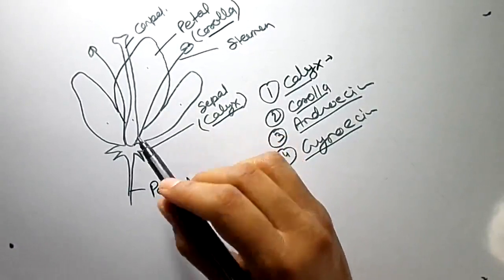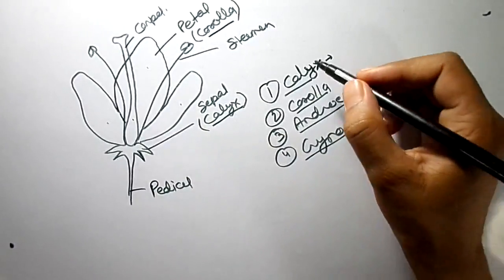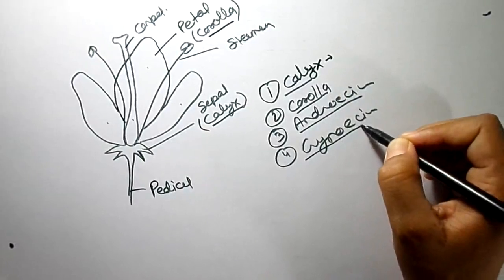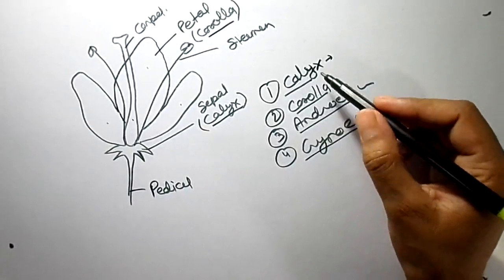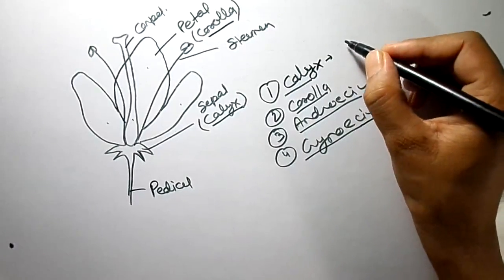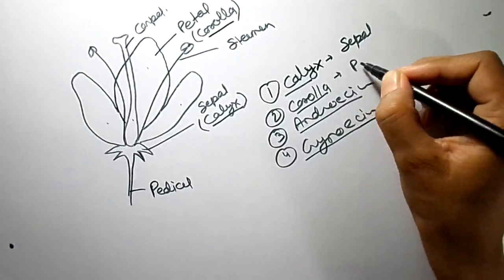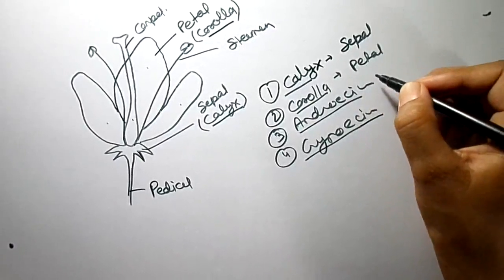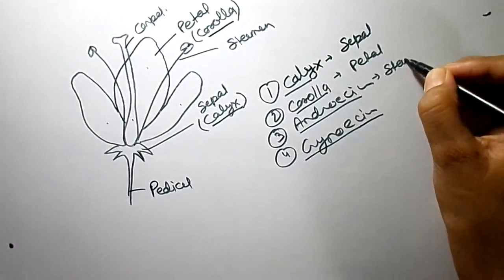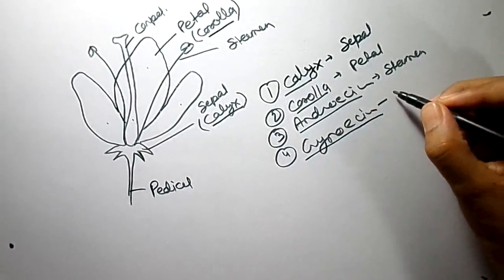The second one is Corolla, third one is Androsium, and fourth one is Gynosium. These are the collective parts. The singular of Calyx is called a sepal, Corolla as a petal, Androsium as a stamen, and Gynosium as a carpel.